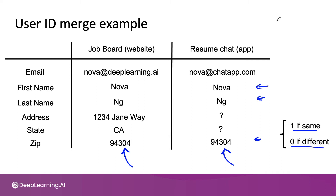User ID merging is a very common function in many companies. Please do this only in ways that are respectful of the user's data and their privacy, and only if you are using the data in a way consistent with what they have given you permission for. User privacy is really important.